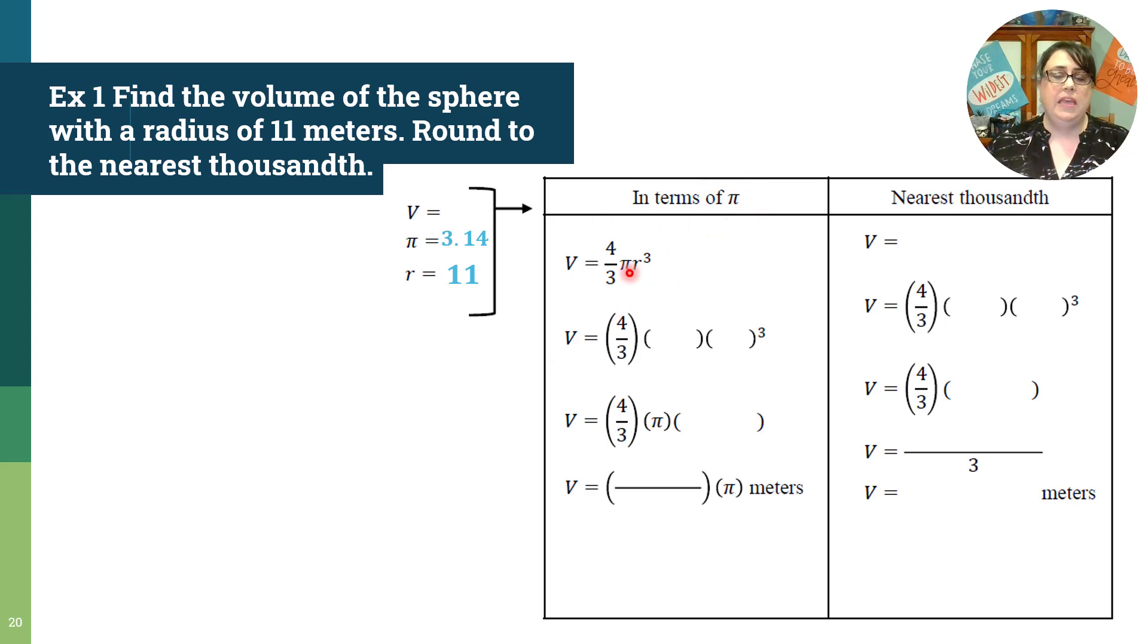Now I'm going to substitute that into my formula. This one's in terms of pi, so I'm going to leave my pi as pi, but I will substitute r as 11. Order of operations says I need to do 11 cubed first, which is 1,331. Then I multiply fractions: 4 times 1,331 over 3 times 1, which is 3. If I was leaving this in terms of pi, I'd be done.